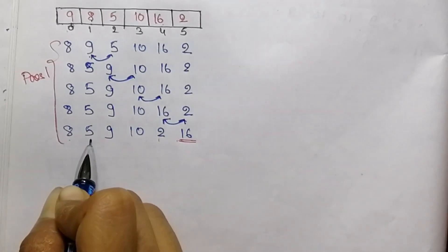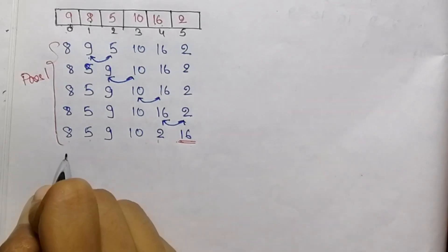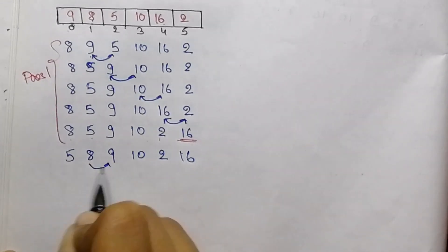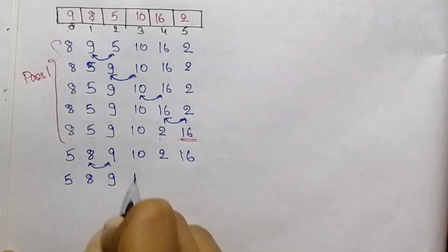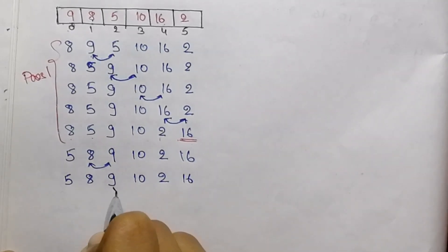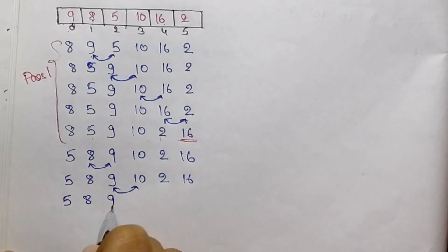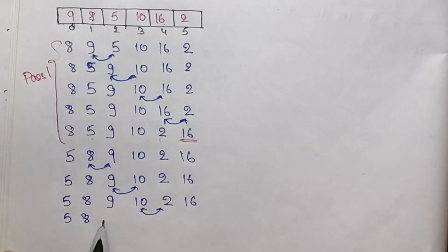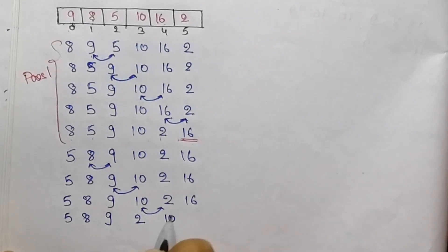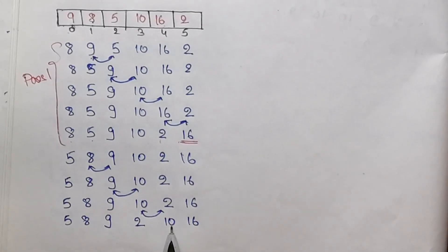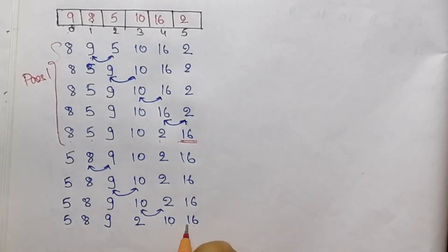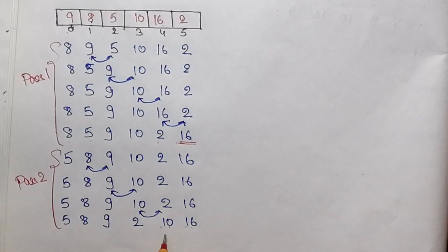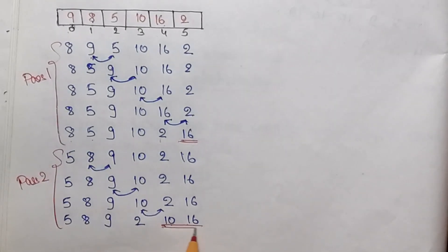Again, 8 is compared with 5. As 5 is smaller, so we will swap them. Now 8 is compared with 9. 8 is smaller, so we do not need to swap. In the next step, we will compare 9 with 10. Again, there is no need of swapping. Now we will compare 10 with 2. 10 is greater, so we will swap them. Now there is no need to compare 10 with 16 as 16 is already in its sorted position. So this is pass 2, and we got the last 2 elements in their sorted position.